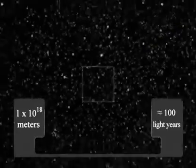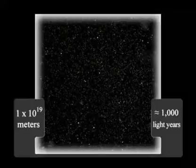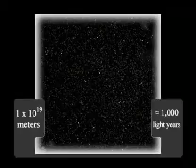Up again a factor of 10, 1,000 light years from the Sun, we can see quite a few stars in the Milky Way. This is now from a view 10 to the 19th meters from the Sun.